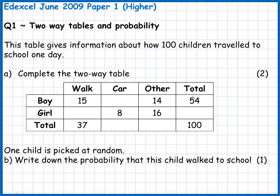So this 54 here is the total number of boys, including walk, car and other. This 37 here will be the total number of boys and girls that walked. And the full total of all of them is going to be 100, because we've got 100 children in the problem.